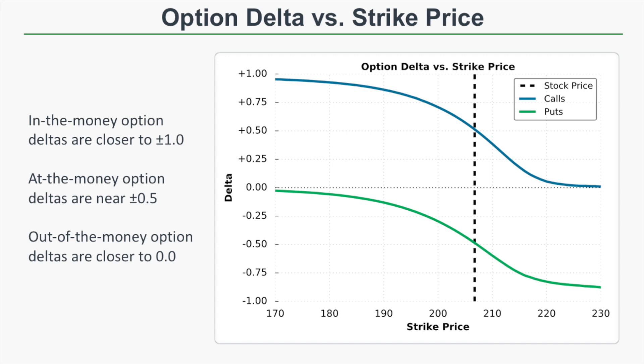At lower and lower strike prices, calls are deeper in the money and have deltas closer to plus 1, while puts are further out-of-the-money with deltas closer to 0. At higher and higher strike prices, call options are out-of-the-money with deltas closer to 0, and put options are more in-the-money with deltas closer to negative 1.